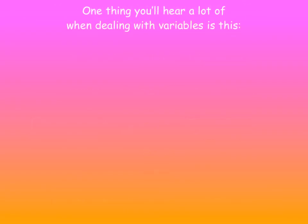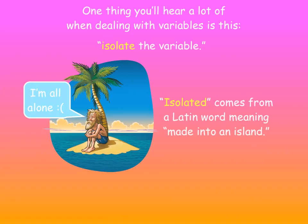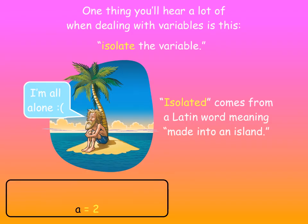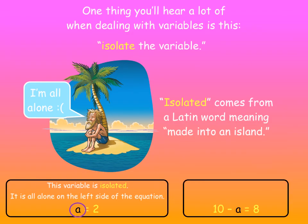One thing you'll hear a lot when dealing with variables is this: isolate the variable. Isolated comes from a Latin word meaning made into an island. I'm all alone. Here, this variable A is isolated because it's all alone on the left side of the equation. But this variable A is not isolated because it's not all alone. See, it's over there with a 10 minus A. Well, that's all for this video.